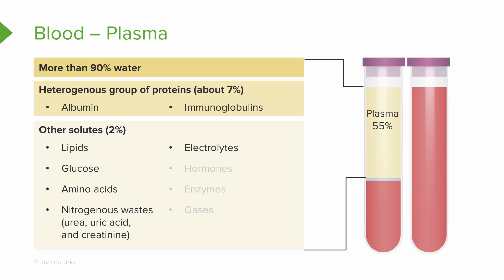Electrolytes are present, including sodium, potassium, chloride, calcium, magnesium, and phosphate. Hormones of the endocrine glands are secreted into the plasma and transported to their target organs — the organs on which they exert their effects. You'll also see gases, and this includes oxygen and carbon dioxide.